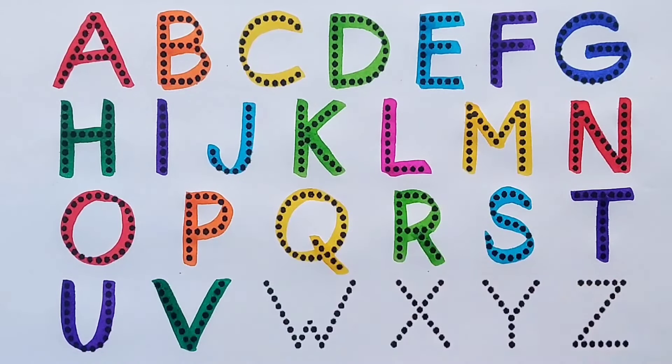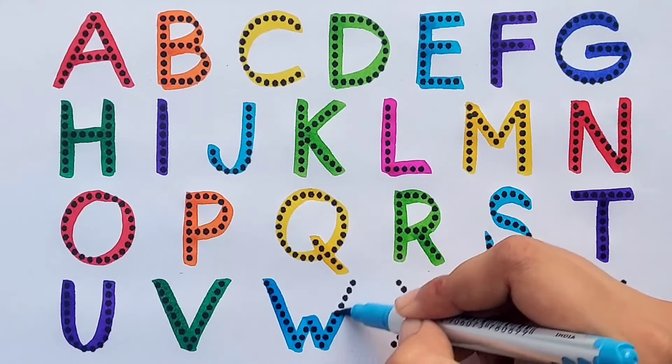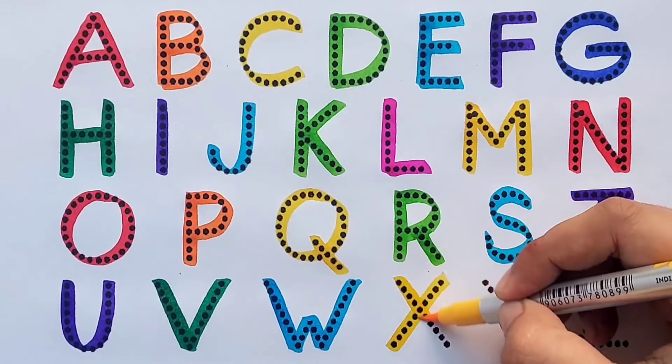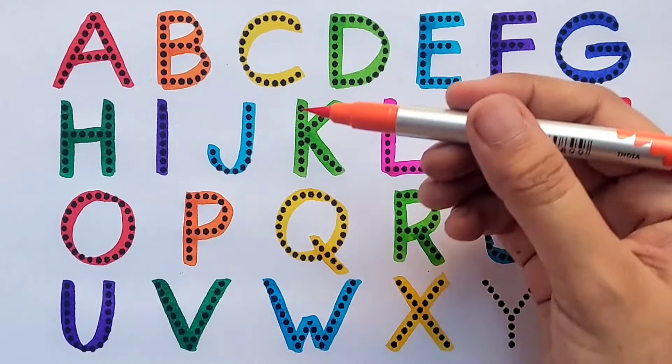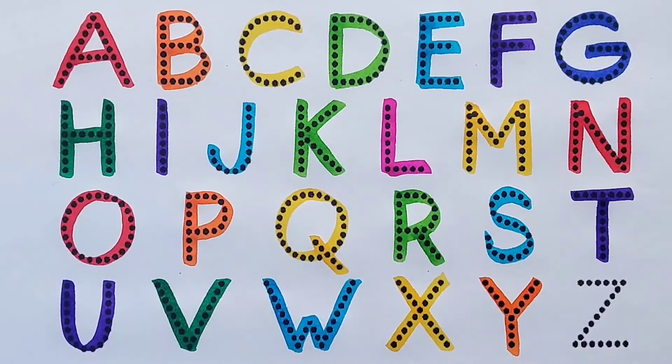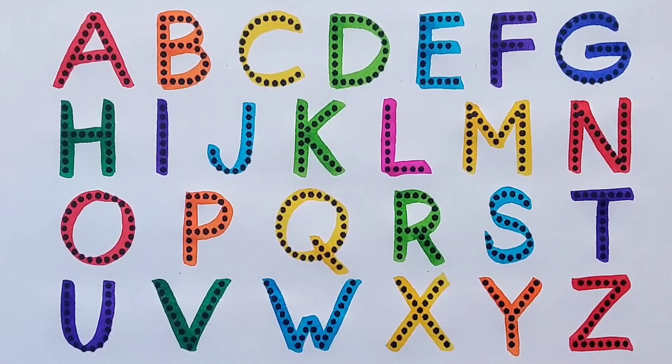Green color V, V for van. Sky blue color W, W for watch. Yellow color X, X for xylophone. Orange color Y, Y for yoyo. Red color Z, Z for zebra.